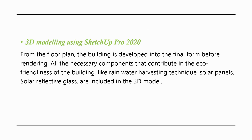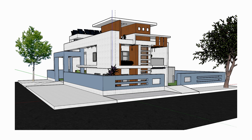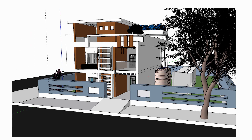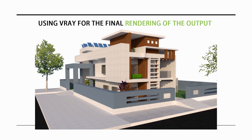From the floor plan, the building is developed into its final form. Before rendering, all necessary components contributing to the eco-friendliness of the building — such as rainwater harvesting, solar panels, and solar reflective glass — are included in the 3D model. This is the 3D model of the proposed green building, with final rendering done using V-Ray software.